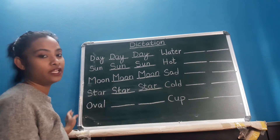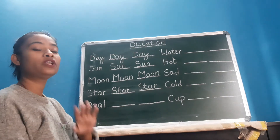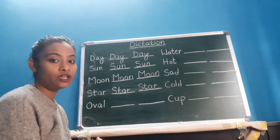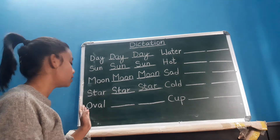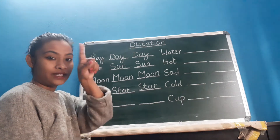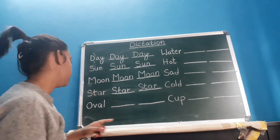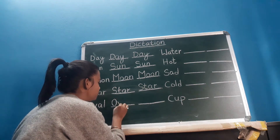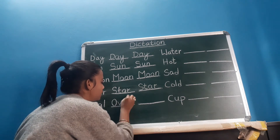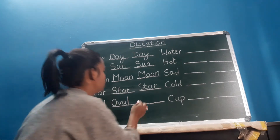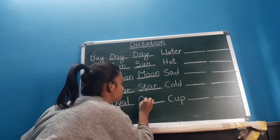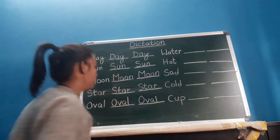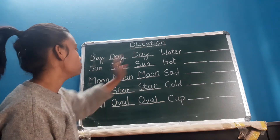Next word: O, V, A, L — oval. Oval is a name of a shape. So usually where do we see this shape? An egg — yes, an egg is oval. O, V, A, L — oval. O, V, A, L — oval. All right?